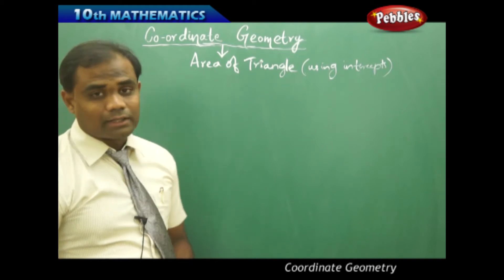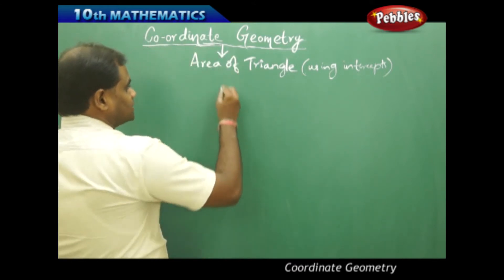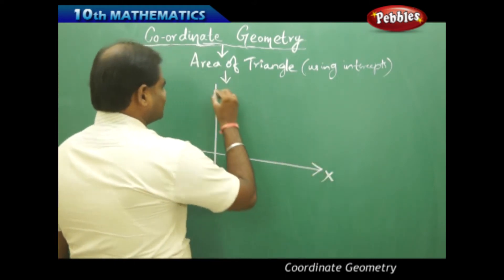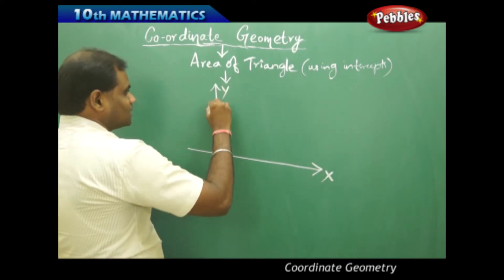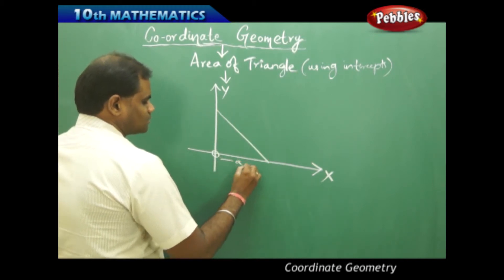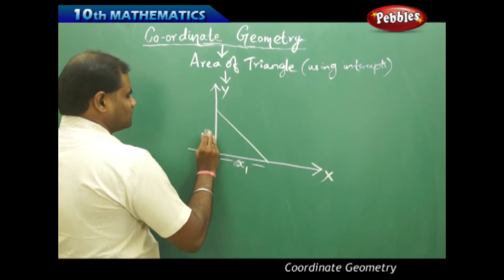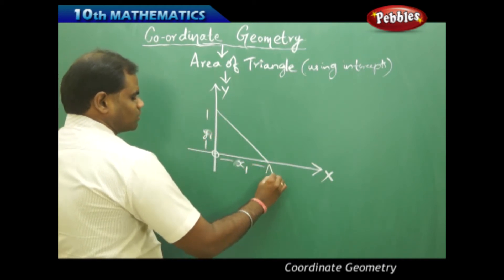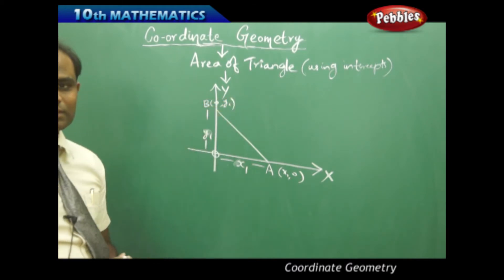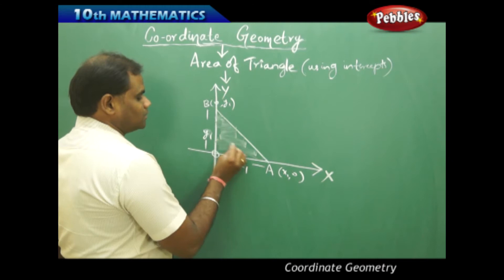Let's see how the area of a triangle given in intercept form can be found. For example, I take the x-axis, y-axis, and origin, and I have a line with intercepts x1 and y1, so that my coordinates of A are (x1, 0) and my coordinates of B are (0, y1), because when taken in intercept form the coordinates of A and B are respectively as stated.